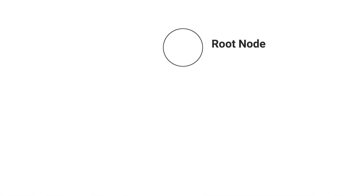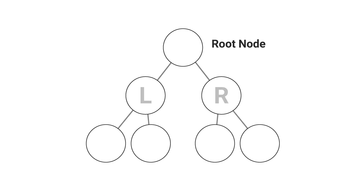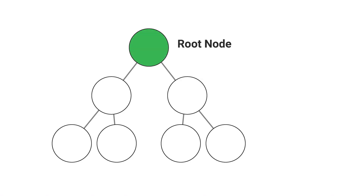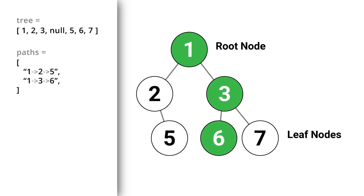We are given a binary tree and we need to find out all the root-to-leaf paths. A binary tree is a tree in which each node can have at most two children — a left child and a right child. The topmost node without any parent is called the root node, and the bottommost node without any children is called the leaf node. We need to find all paths from the root node to the leaf nodes. For example, for this tree we have the paths 1→2→5, 1→3→6, and 1→3→7.